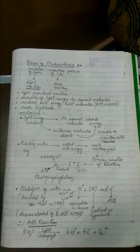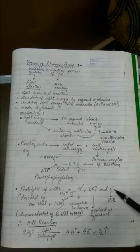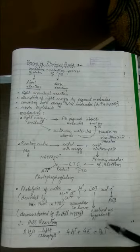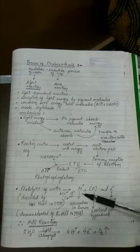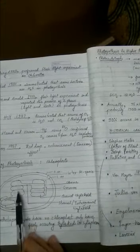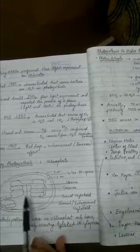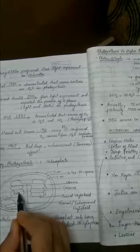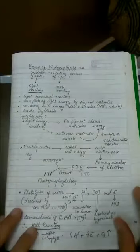So photosystem second will receive the electrons from the water molecule. This oxygen will go out as by-product and this H+ will accumulate inside the lumen. Each thylakoid has a cavity inside. That cavity is called as lumen. So H+ accumulates inside the lumen or the cavity.